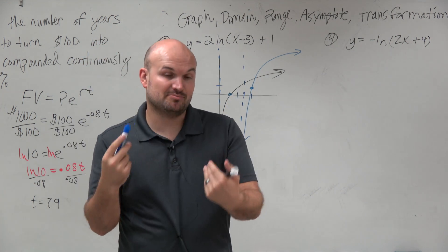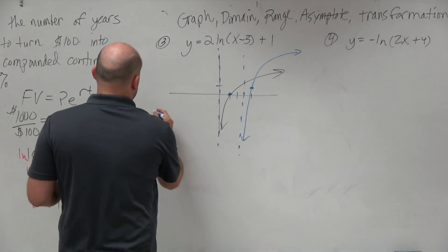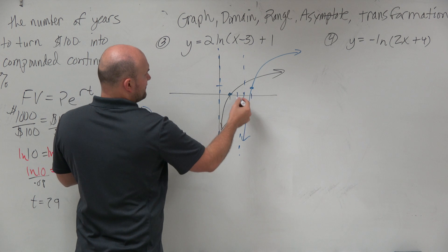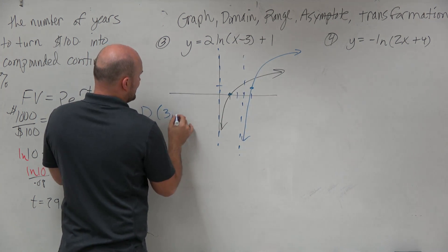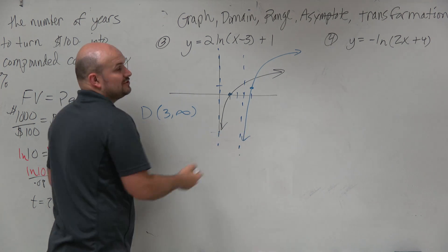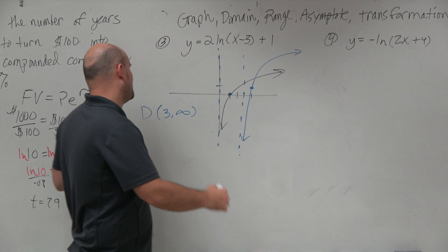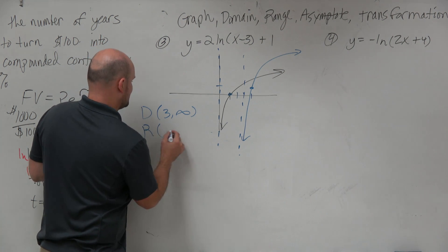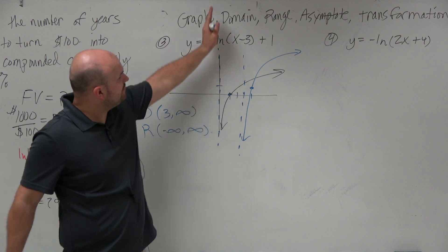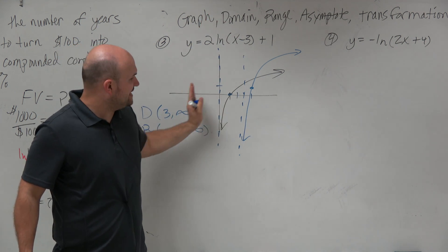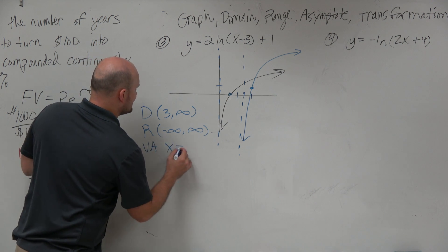By looking at the graph — this blue graph — I can identify my domain, my range, and so forth. My domain is going to be from 3; it's at an asymptote so it's not going to contain it, so 3 to infinity. My range: the graph is going down to infinity and it's going to continue increasing, so it's negative infinity to infinity. My vertical asymptote for the parent graph was at 0, and that got shifted over 3, so that is a vertical asymptote at x equals 3.